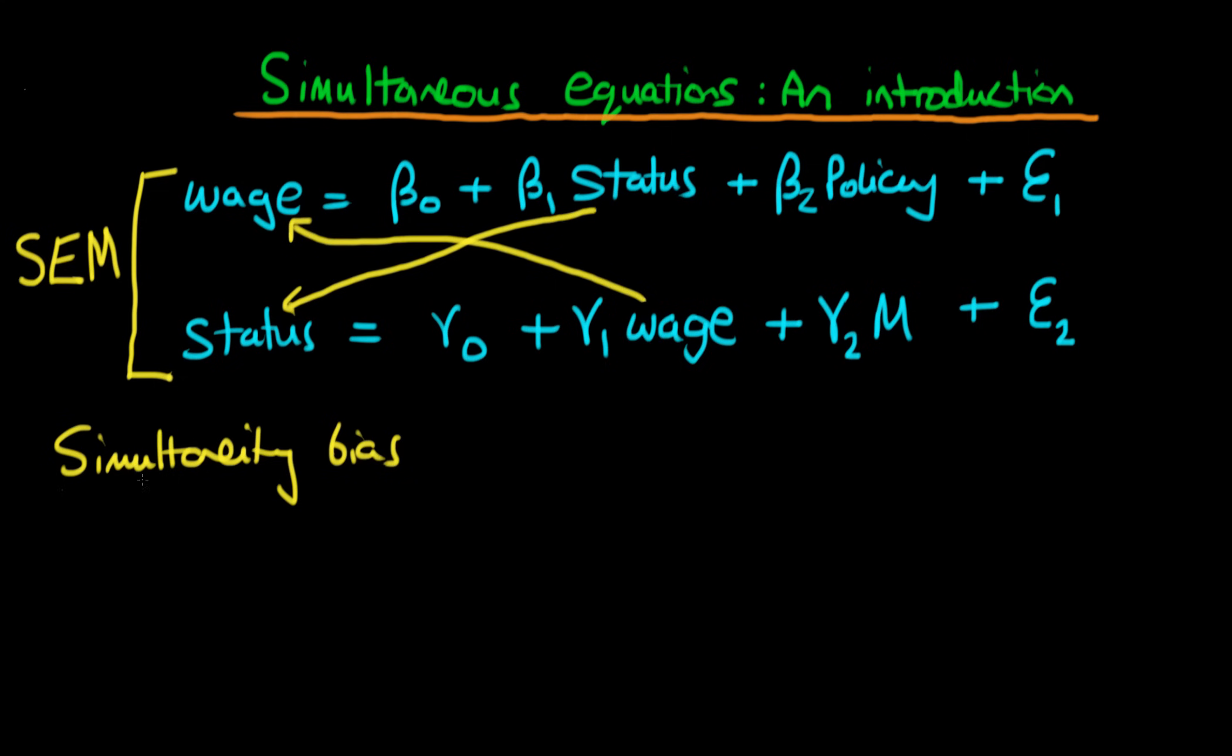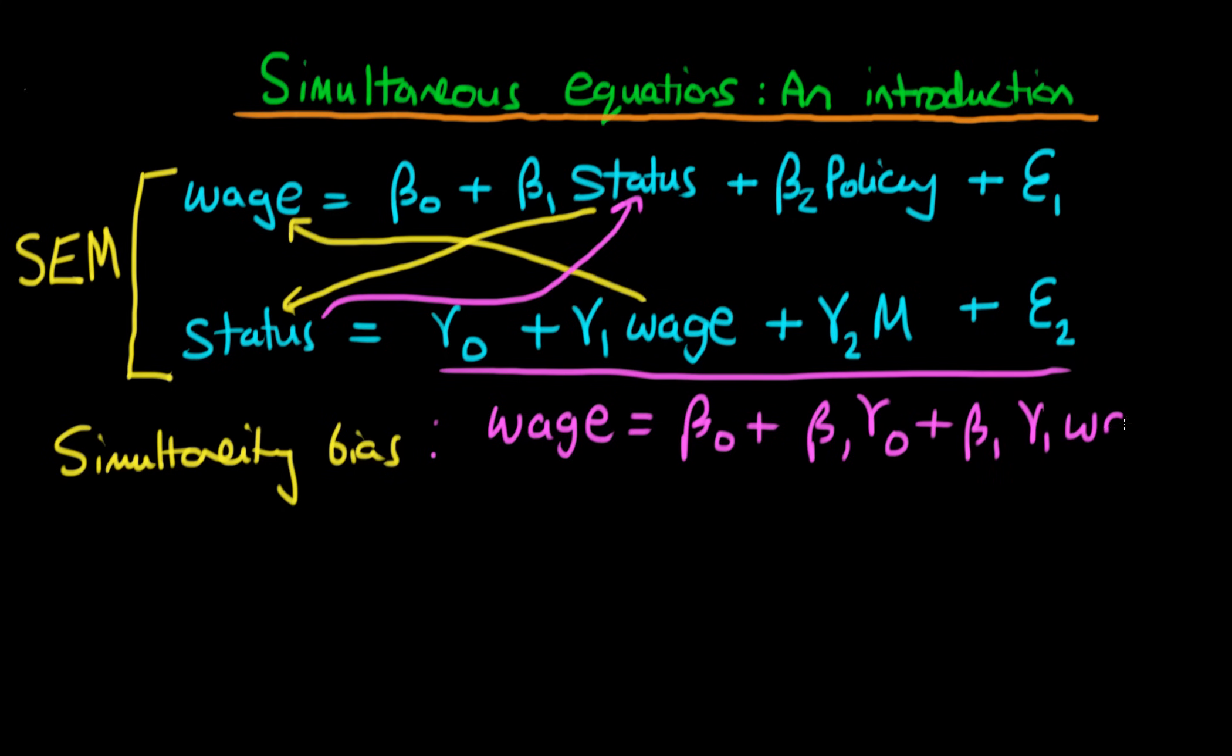So how does this bias actually appear? Well, in order to see this, what we need to do is substitute in for status in the first equation, using our relationship for status from the second equation. So if we do that, we're going to get that wage is equal to beta nought plus beta 1 times status. Well, status is just this whole term here. So it's beta 1 times gamma nought plus beta 1 gamma 1 times wage plus beta 1 gamma 2 times whether an individual is married plus beta 1 times epsilon 2.